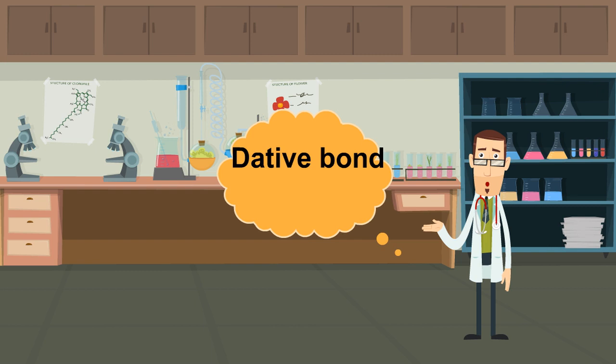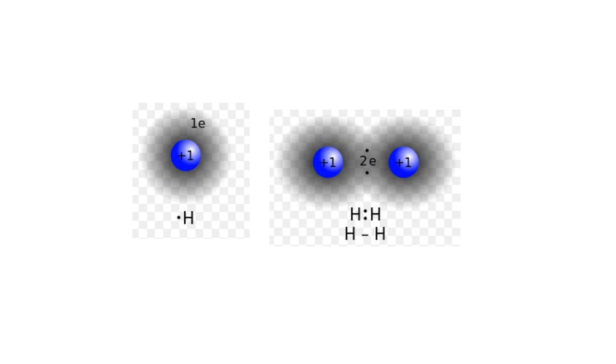Now, let's talk in different shape between the dative and covalent bond. Starting with the covalent bond, which is a chemical bond that involves the sharing of electron pairs between atoms. A covalent bond forming H2, hydrogen, where two hydrogen atoms share the two electrons.